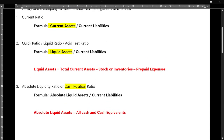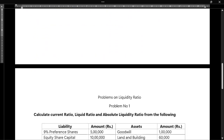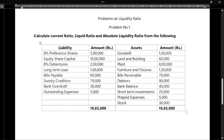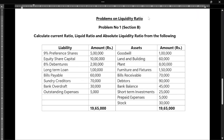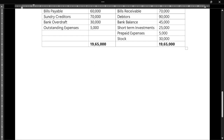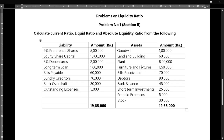Now let us take up the first problem. This problem is for Section B, so you can expect this type of problem in Section B. The question says: calculate current ratio, liquid ratio, and absolute liquidity ratio from the following. So we need to calculate three different ratios. They have given us the balance sheet of that particular company.